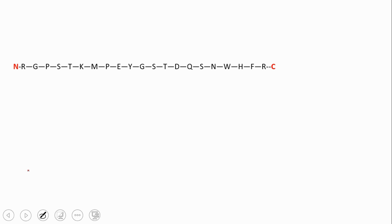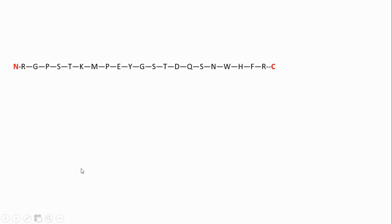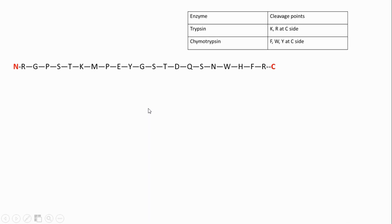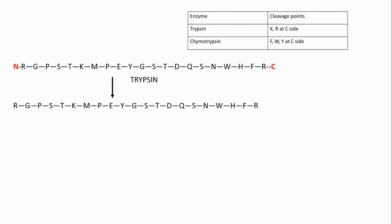Having known those basics, let us cleave our oligopeptide with trypsin. I suggest whenever you're writing an amino acid sequence, write N on the left-hand side and C on the right-hand end, so you'll never have confusion about which is the C-terminal and which is the N-terminal. For trypsin, the cleavage site is K and R at the C-side, so let us scan our oligopeptide for K.